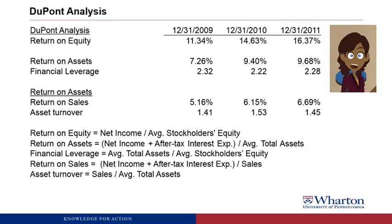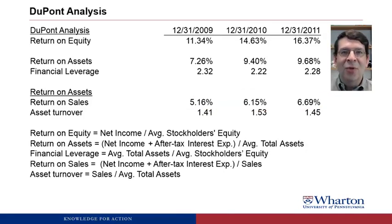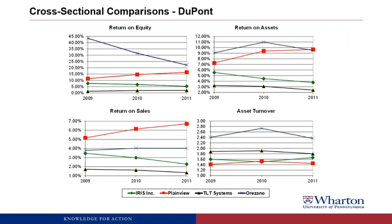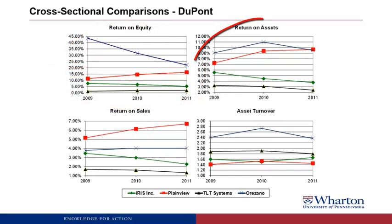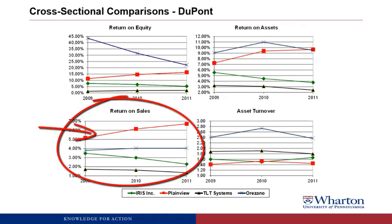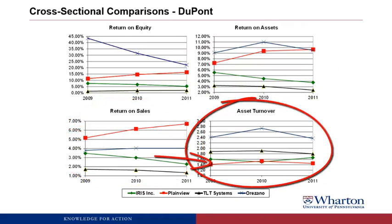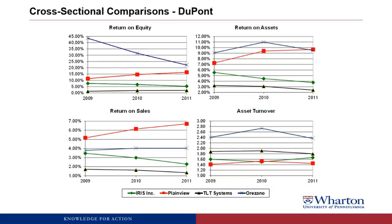The narrator mentioned that Plainview adopted new 6G technology — maybe every company in the industry has better profitability as a result of the new technology. Excellent point. We need to do cross-sectional comparisons — compare Plainview to other companies in the same industry. Comparing them to three of their closest competitors, it looks like Plainview is having atypical success. They're the only company whose return on equity increased over these three years. Two competitors were down slightly, one was down dramatically. Plainview had a steady increase in ROA, steady increase in return on sales — while for other companies these were flat or down. Asset turnover for all companies was up and down. Whatever Plainview is doing with its ROE, ROA, and ROS is not just an industry phenomenon — it's doing something different than its competitors.